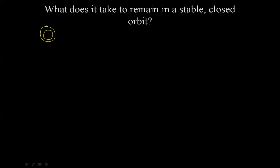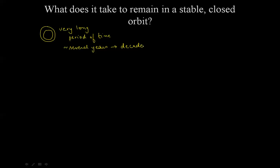Let's suppose that this is the Earth and that this is an orbit. A stable orbit is one in which an object orbiting the Earth, or any other central body, will stay in that orbit for a very long period of time — we are talking several years, going to decades even. Many satellites have indeed been in stable, closed orbits around the Earth for decades.